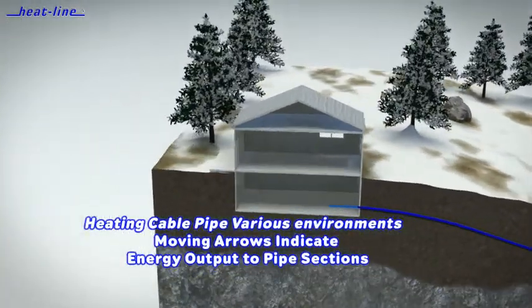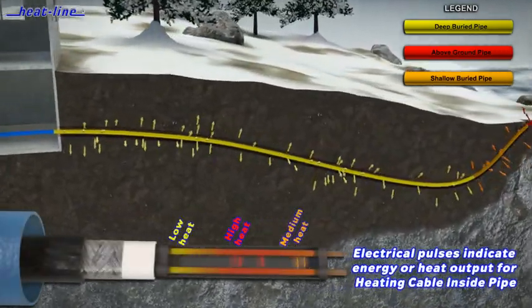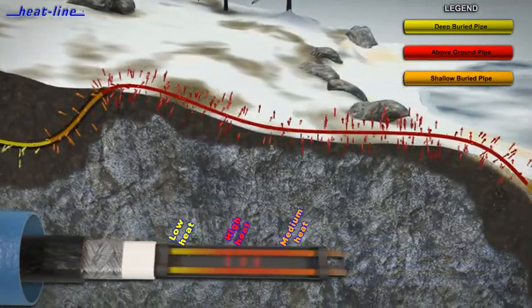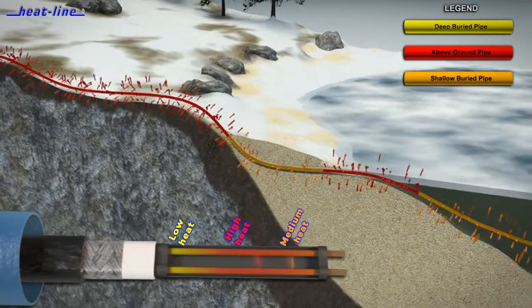At every point along the pipe, as the water pipe gets colder, the heating cable automatically increases heat output in that area. As the pipe warms, the heating cable automatically reduces heat output in that specific area.